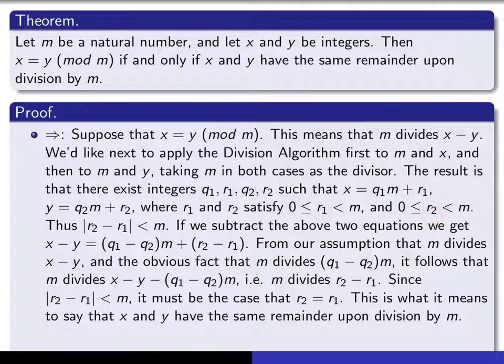Since r1 and r2 both lie between 0 and m, it follows that their difference in absolute value must be strictly smaller than m. Now, look at this equation and this equation and subtract them. That gives you an expression for x minus y, and that's equal to this minus this. If we factor out a common m and group the terms accordingly, we get this equation here.